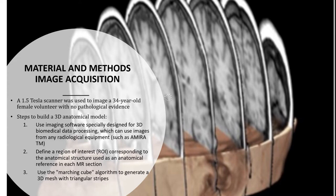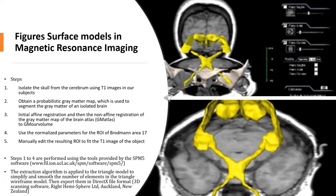Now we are going to explain the process of creating three-dimensional anatomical models. First of all, we need to obtain the images. In our study we used a 1.5 Tesla scanner. The steps to build the 3D model are: first, use imaging software that can process biomedical data; then define the regions of interest to be used as anatomical references; then grids are used as additional references. Next, you need to isolate each structure and segment the grey matter mask.